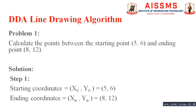Now let us see one problem based on the DDA line drawing algorithm. Our problem statement is: calculate the points between starting point (5, 6) and ending point (8, 12). The coordinates of the starting point and ending point are given to us. We write those coordinates in standard format, where (x0, y0) indicates the starting point and (xn, yn) indicates the ending point.